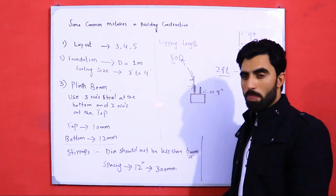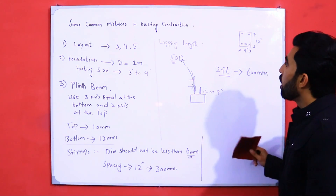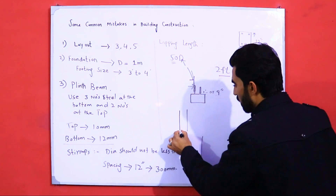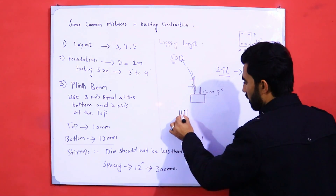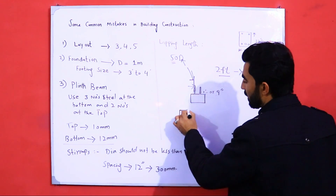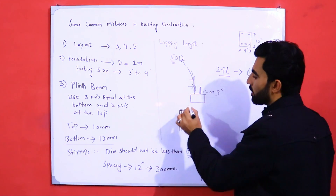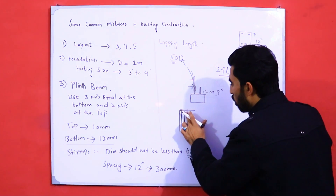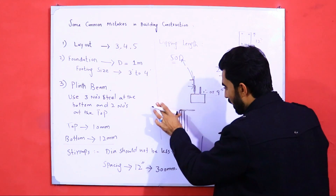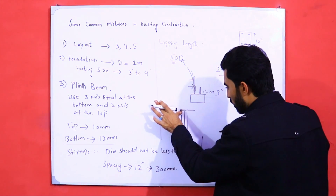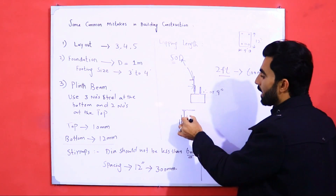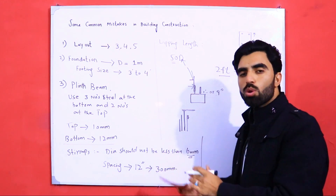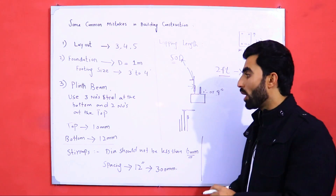This is another important point. The lapping length, as you can see for these steel bars — the lapping should not be provided at the same point. Many masons and contractors ignore this. One bar's lap should be lower and the other should be higher, alternating up and down. Then it can make a good joint with the concrete and good bond with the steel structure. Therefore, lapping length should never be provided at the same point.